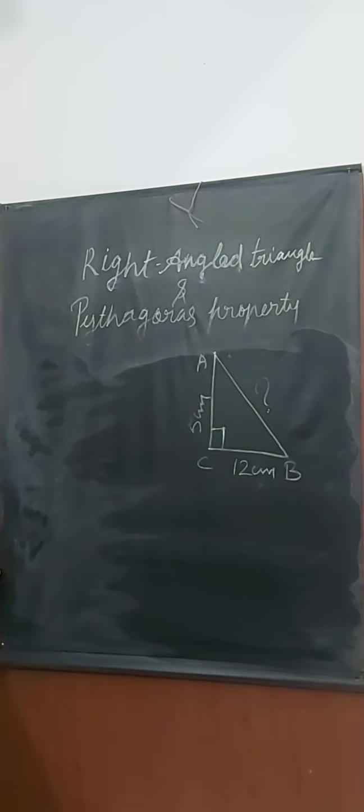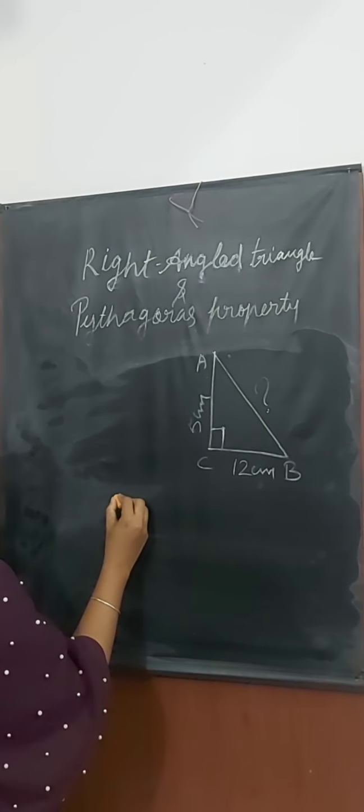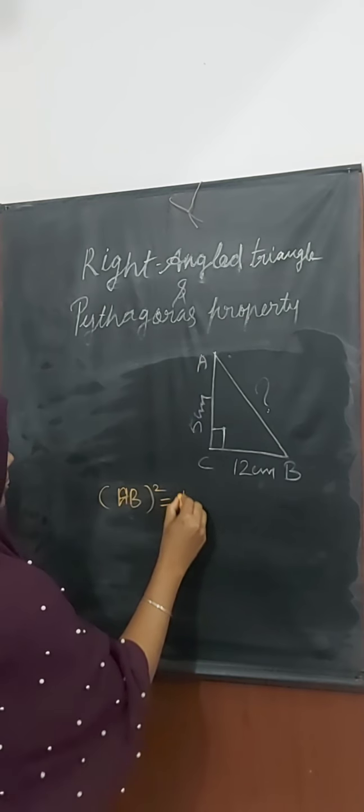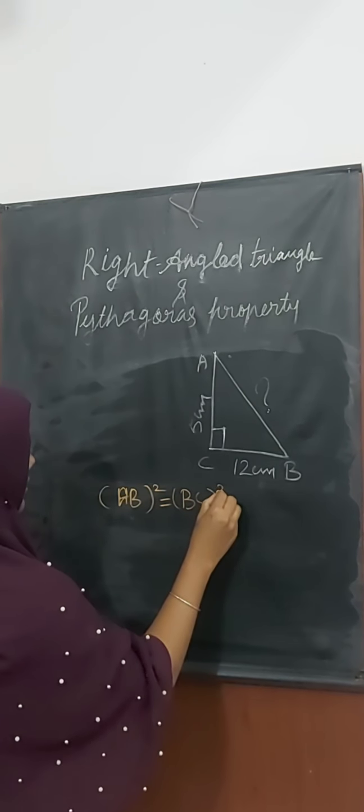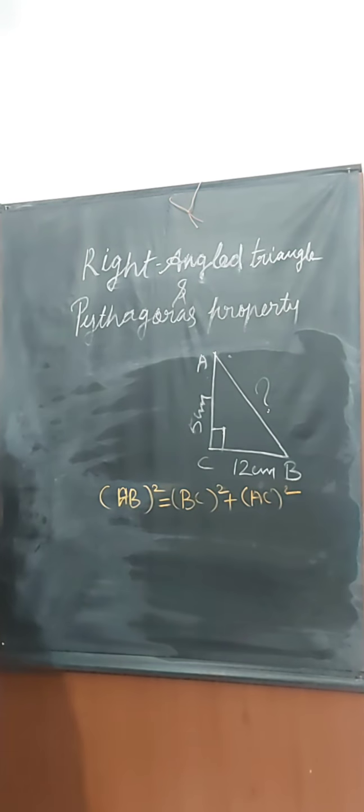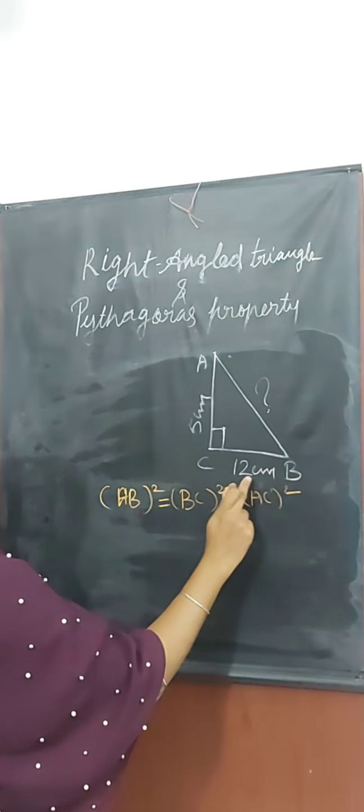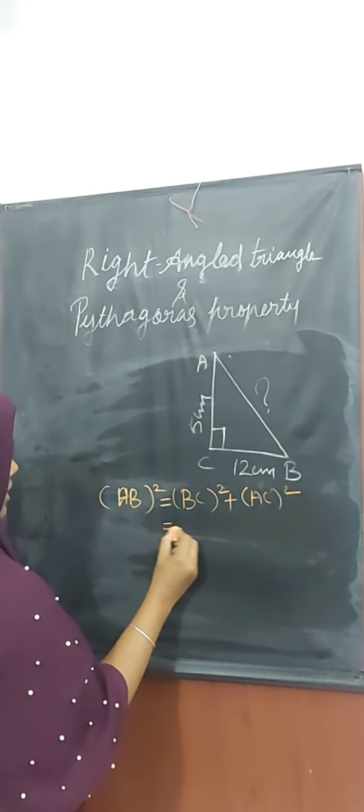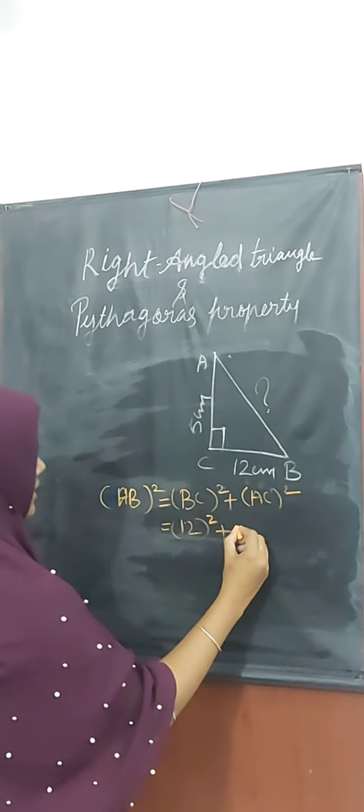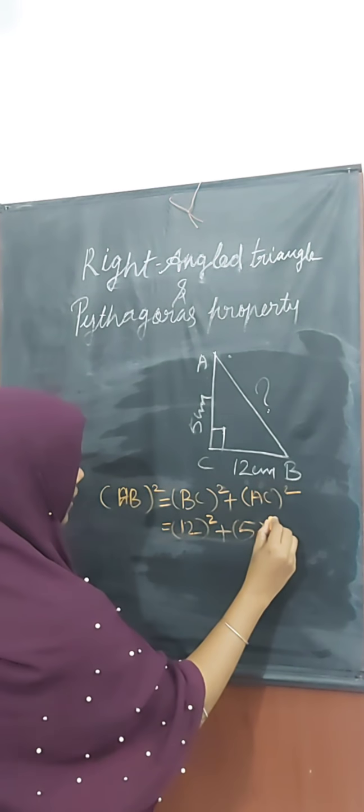How to find AB? We'll use the Pythagoras theorem. AB square equals BC square plus AC square. BC equals 12 cm, so 12 square, plus AC equals 5 cm, so 5 square.